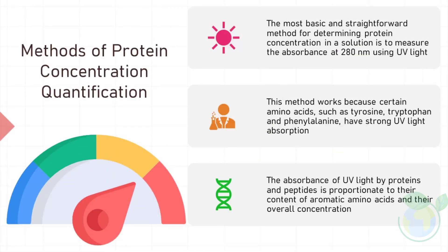Methods of Protein Concentration Quantification. The most basic and straightforward method for determining protein concentration in a solution is to measure the absorbance at 280 nm using UV light. This method works because certain amino acids, such as tyrosine, tryptophan, and phenylalanine, have strong UV light absorption. The absorbance of UV light by proteins and peptides is proportionate to their content of aromatic amino acids and their overall concentration.